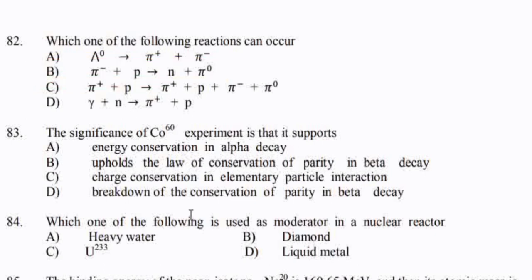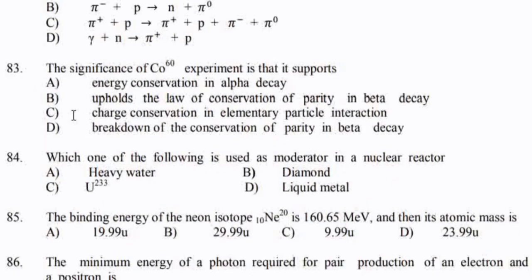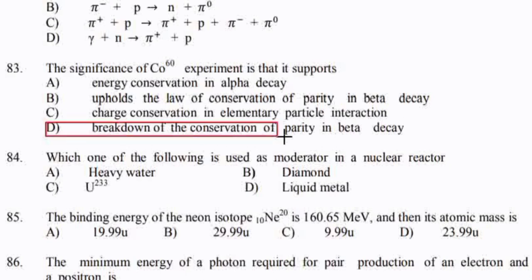The significance of the cobalt-cysteine experiment is that it supports option D: breakdown of the conservation of parity in beta decay.